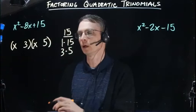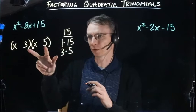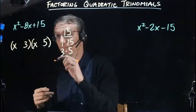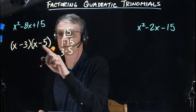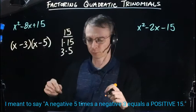Since 15 is positive, these have to be either both positive or both negative. But I need a negative 8x, so I'm going to make them both negative with negative 3 and negative 5, and I'm hoping to end up with negative 8x here.